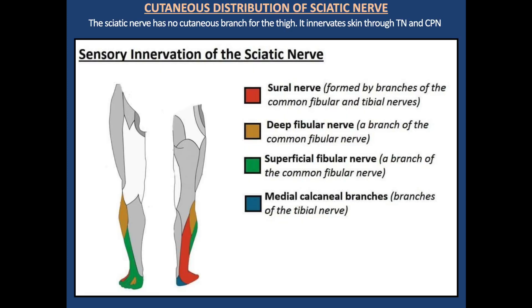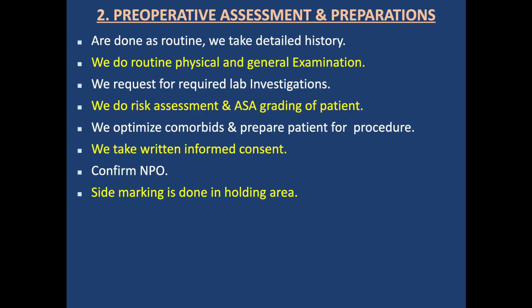This diagram shows the cutaneous branches of the sciatic nerve. The sciatic nerve has no cutaneous branch for the thigh — it innervates skin through the tibial nerve and common peroneal nerve.